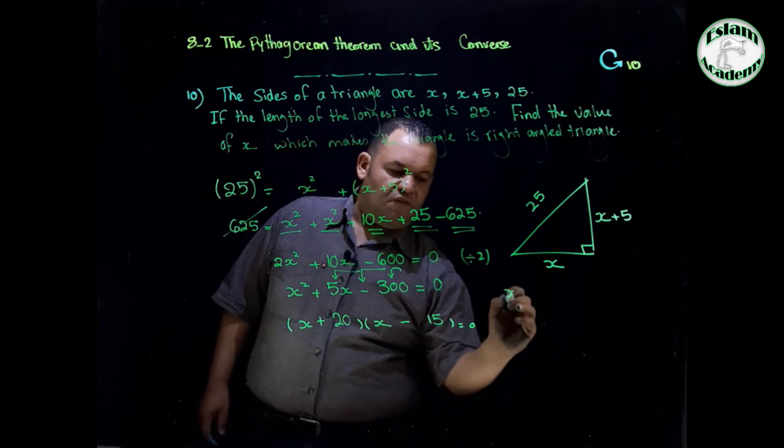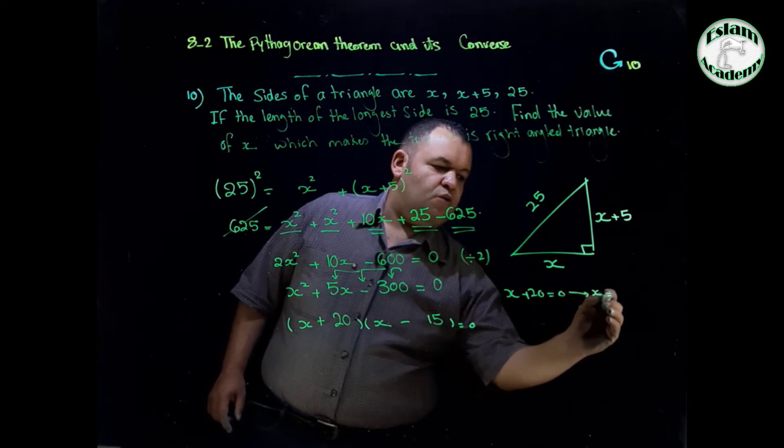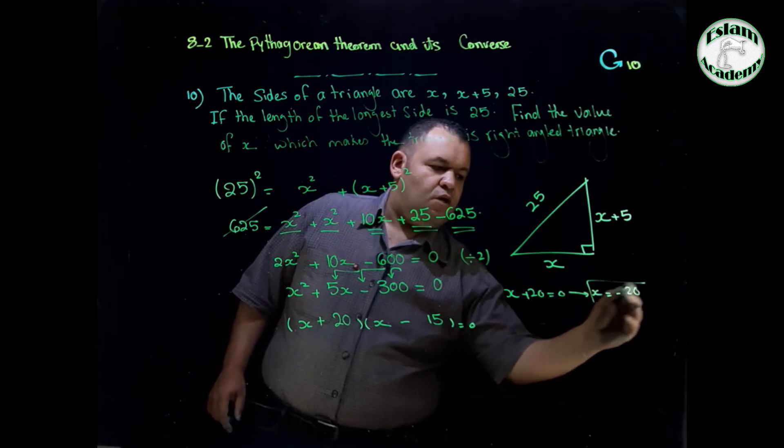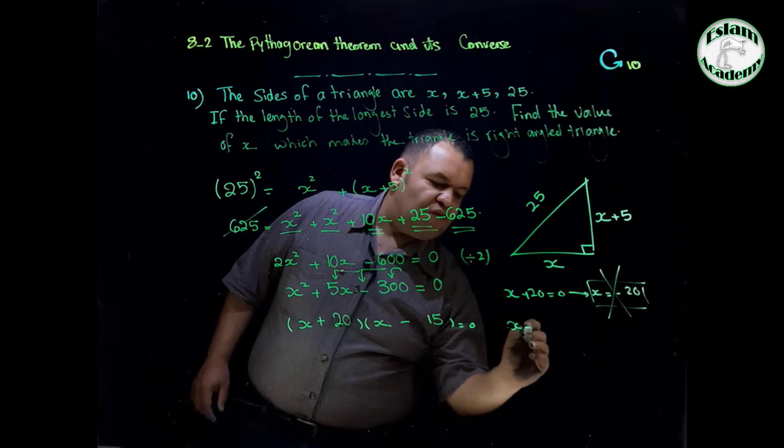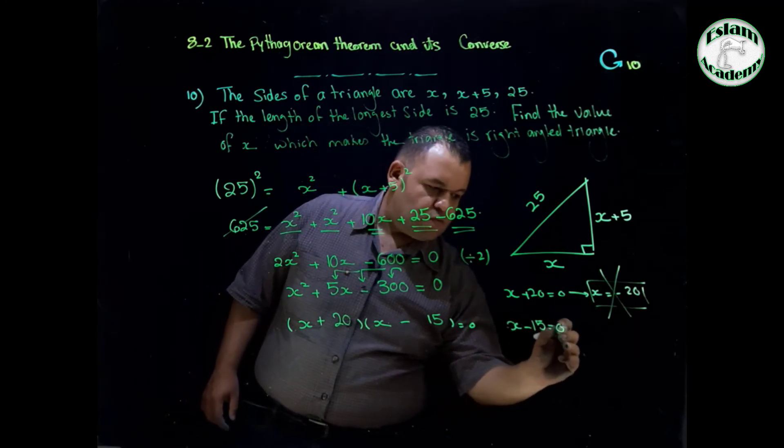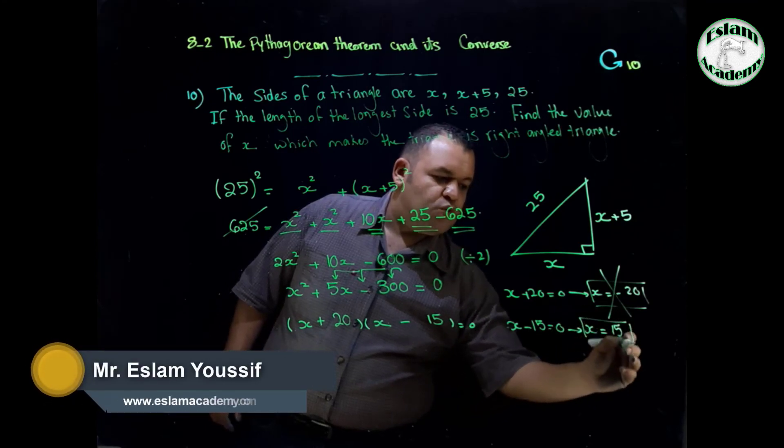Now from the first bracket we have x plus 20 equals 0, which means x equals negative 20. That would be refused because we can't have a length with negative. From the second bracket we have x minus 15 equals 0, then x equals 15. That would be the value of x.